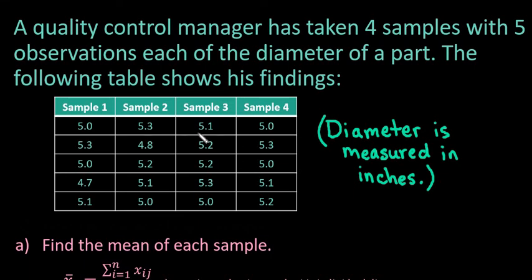For this video, what I want to do is show you how to find the mean and the standard deviation of the sample means for a quality control situation. A quality control manager has taken four samples with five observations each of the diameter of a specific part. The following table shows his findings, and the diameter for each of these is measured in inches.